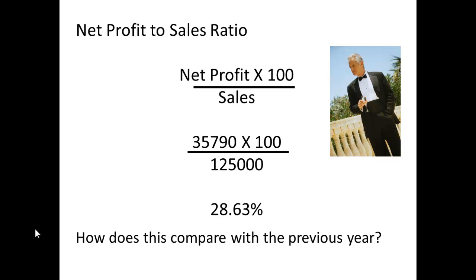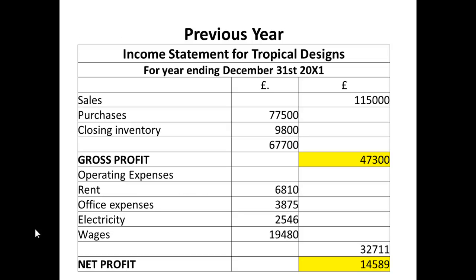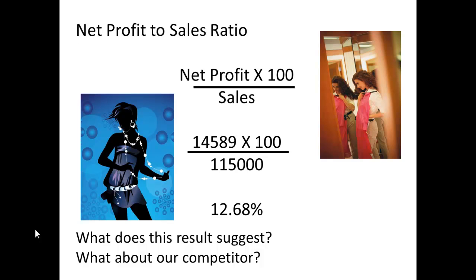So we'll start off by saying, how does this compare with the previous year? We now have the previous year's income statement. I can see here that the net profit is 14,589 and that the sales were 115,000. So I've got the figures I need to do my calculation: 14,589 divided by 115,000, multiplied by 100, gives 12.68%.